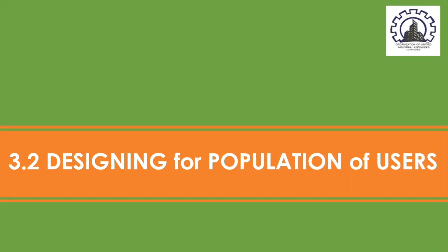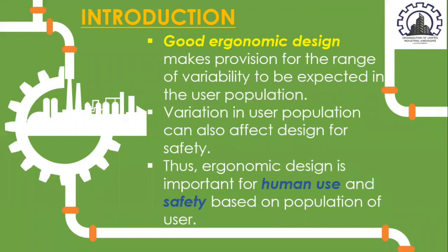In designing for a population of users, it is of paramount importance for designers to determine the population and select representatives in that population. Good ergonomic design makes provision for the range of variability to be expected in the user population. Variation in user population can also affect design for safety, and therefore ergonomic design is important for human use and safety based on population of user.